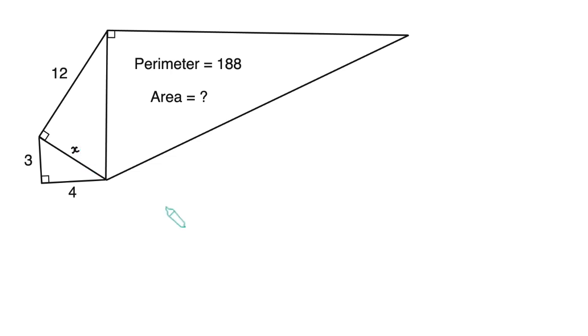The first step is to fill in some of these inside lengths. So if we label this one X, then by Pythagoras theorem, we have that X squared equals three squared plus four squared, which is nine plus 16,